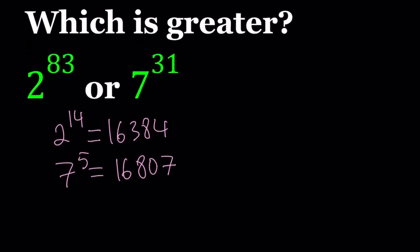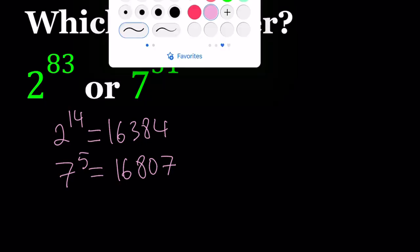Now, from here, I want to jump into the higher powers. I have 83rd and 31st. So that tells me to get closer to 7 to the power of 31, I should probably consider 5 times 6 plus 1. So it makes sense if I raise both sides to the 6th power. Let's go ahead and do that.